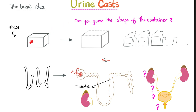Think of casts as ice cubes. If I show you an ice cube, I didn't show you the container in my freezer — but you can guess the container's shape from the cube's shape. When you pour a fluid into a container, it takes the shape of the container. So when I see elongated shapes in the urine, they look like kidney tubules. When you see casts in the urine, whatever they are, they are coming from the kidney tubule — not the bladder, not the urethra.